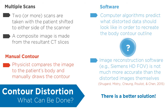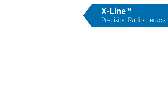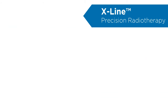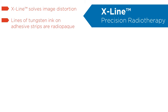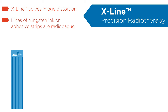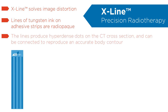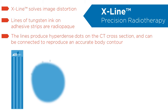Thankfully, there is a better solution. Our X-Line device solves image distortion within the extended field of view. By placing lines of radio-opaque ink on adhesive strips, we are able to provide a series of reliable, hyper-dense dots on the CT cross-section that allow the body contour to be reconstructed accurately.